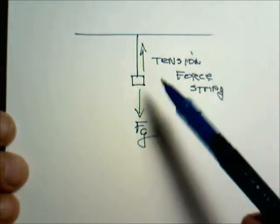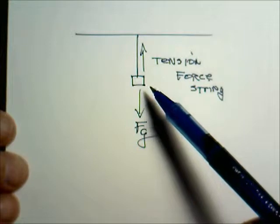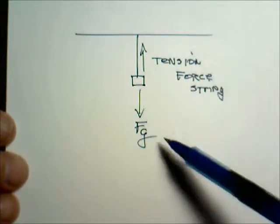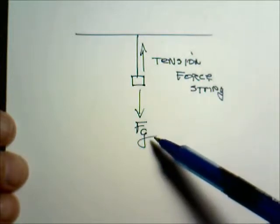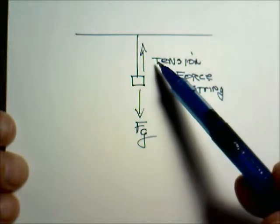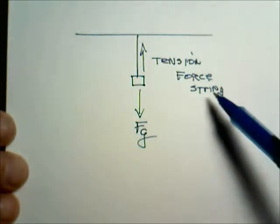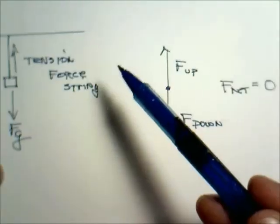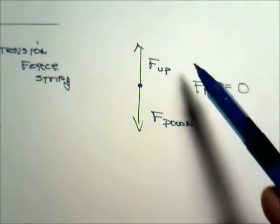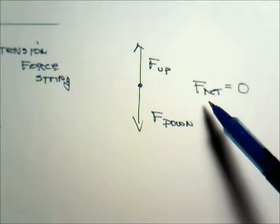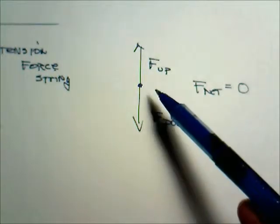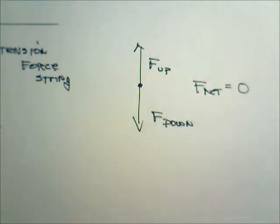Consider an object hanging from a string. There are two forces acting on that object. One of course is the force due to gravity which is pulling it down. The second is the tension in the string which is pulling it up. So we have two opposing forces. The force down and the force up and the net force then is equal to zero. Therefore the object doesn't move.